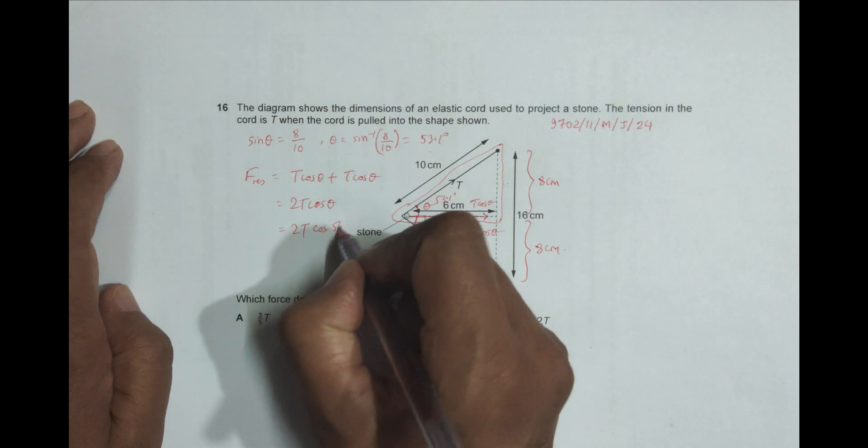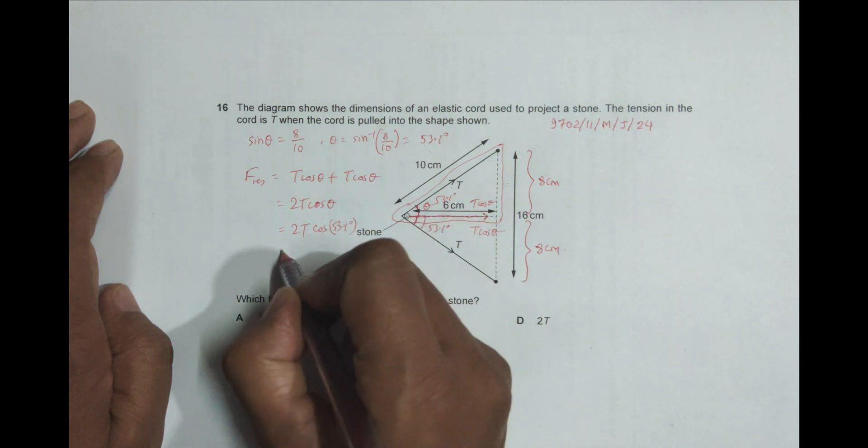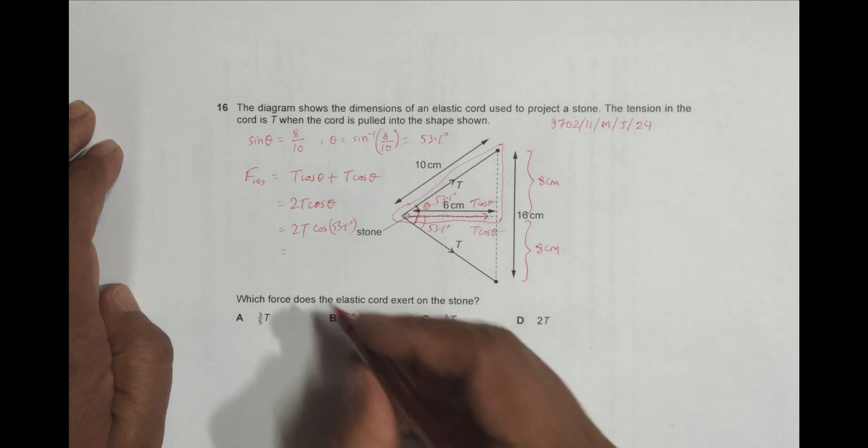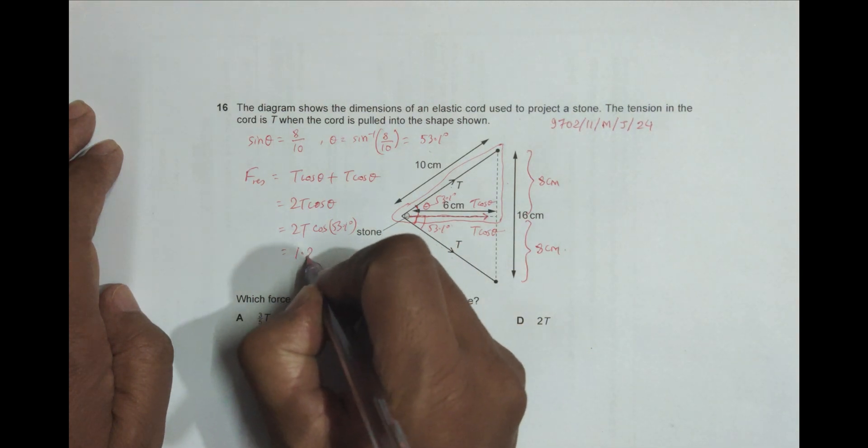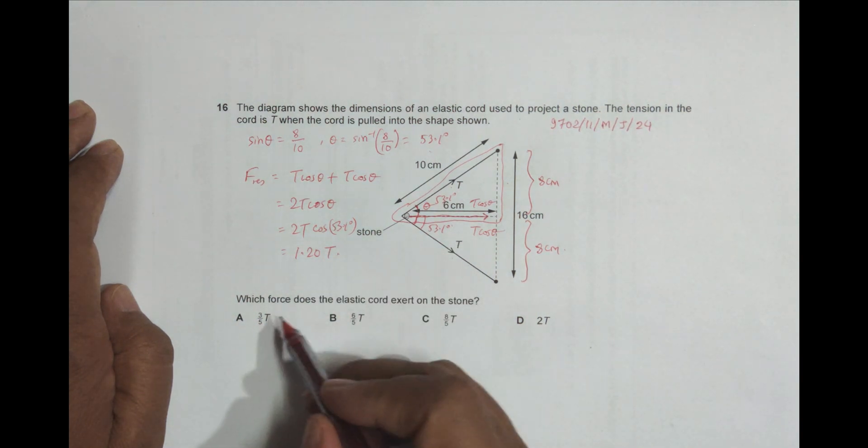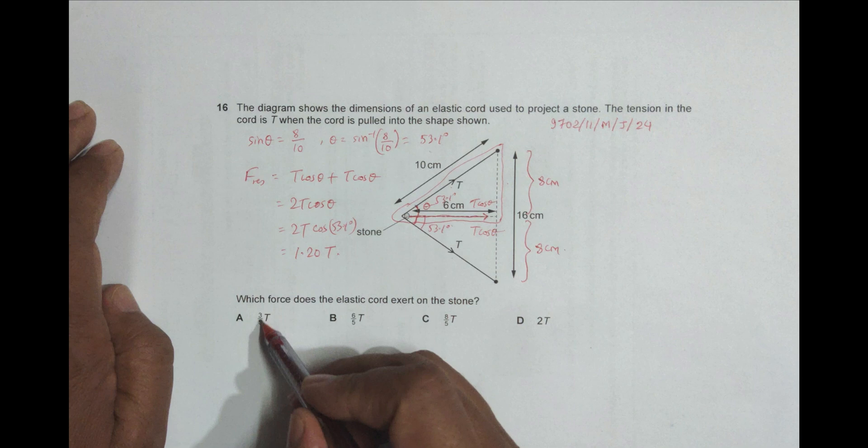So it equals 2T cos of 53.1 degrees. Cos 53.1 equals this much, so into 2 is 1.20. So it's 1.20 into T.